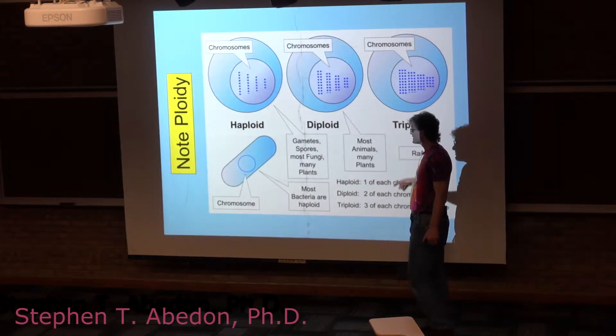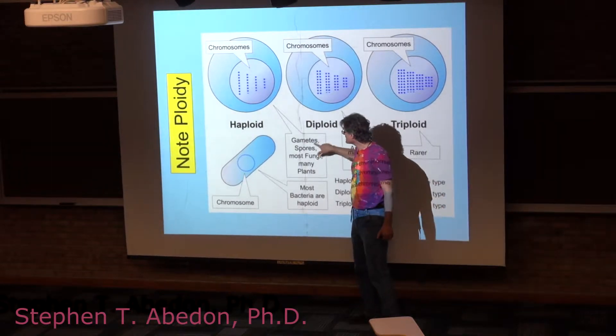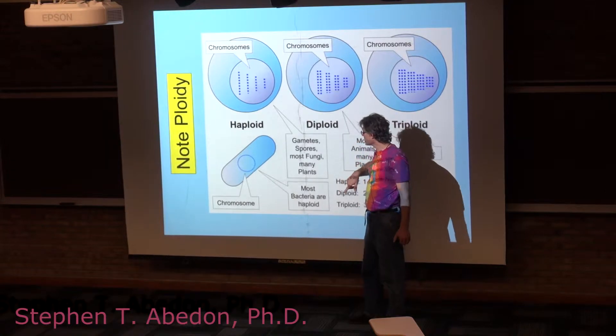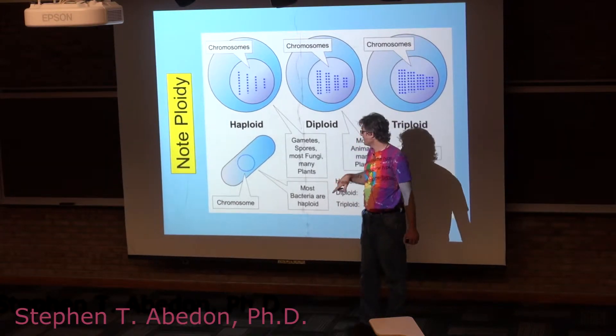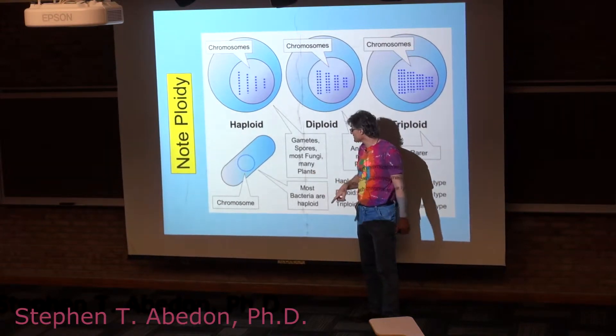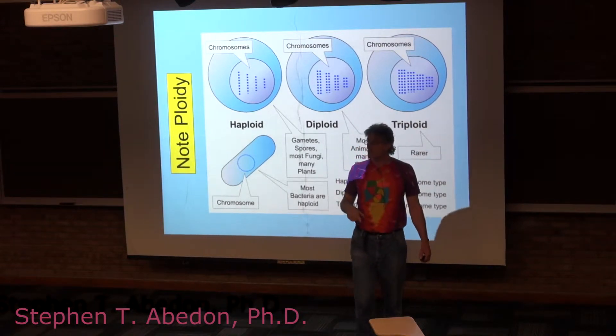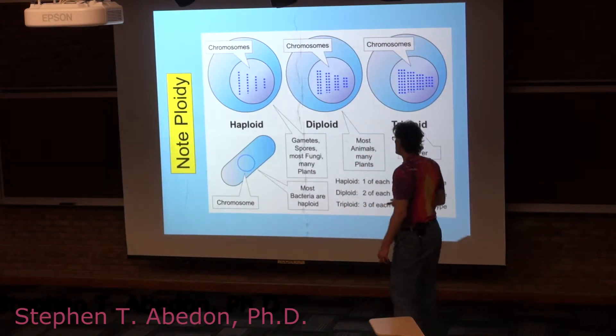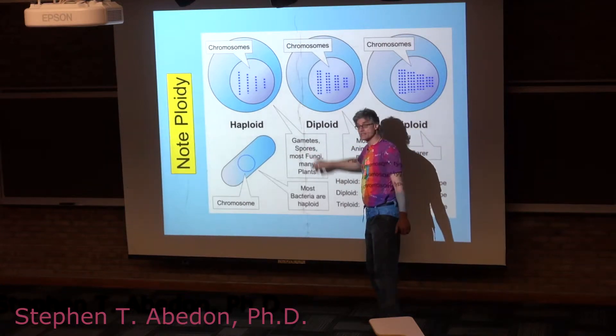Now you've got variations in sexual cycles. The haploid state corresponds to spores in fungi. It actually corresponds to four spores in plants as well. It corresponds to the gametes in both of them. It corresponds to the gametes in animals.